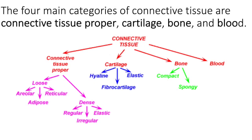Connective tissue is divided into four main classes: connective tissue proper, cartilage, bone, and blood. It's really helpful to draw out a little diagram like the one shown here to get you started with organizing it in your mind. It is a very diverse category, so understanding it and putting it all into perspective is a good idea from the get-go.